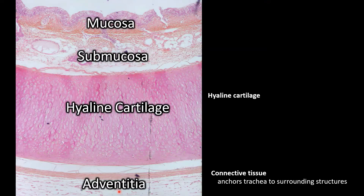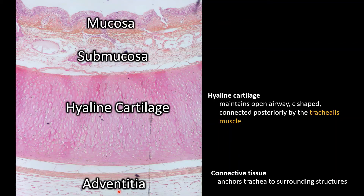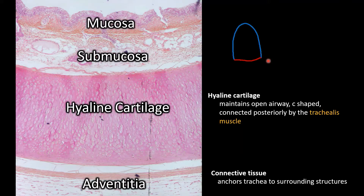You have a series of C-shaped rings which are connected in the back by the trachealis muscle — C-shaped ring in the front, trachealis muscle in the back. The trachealis is a smooth muscle that when you're exhaling forcefully, like when you're coughing, it constricts to bring the two ends of your cartilage closer together to create a smaller airway, which helps force the air out.